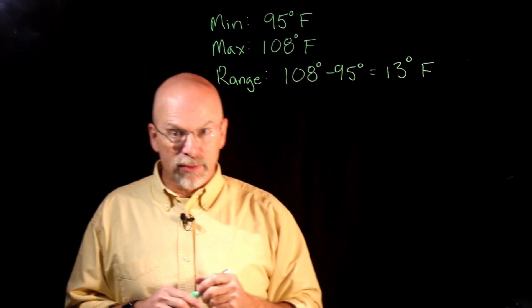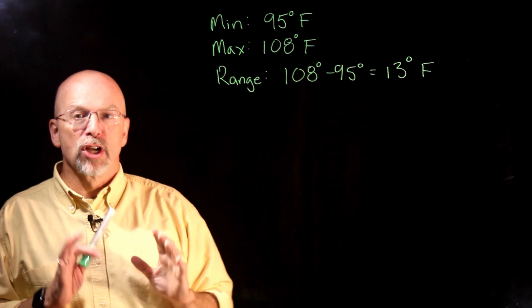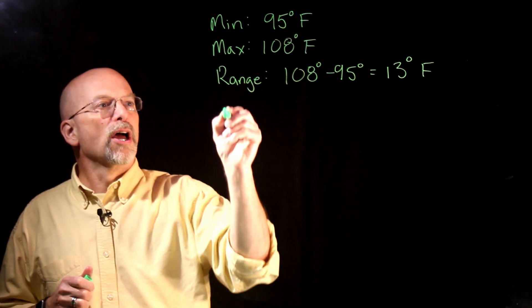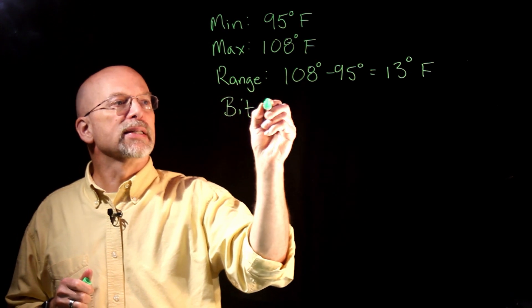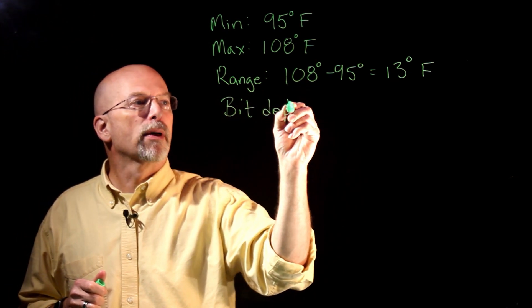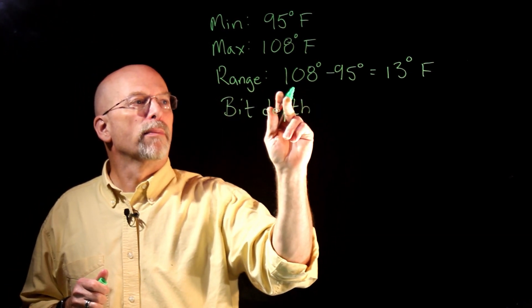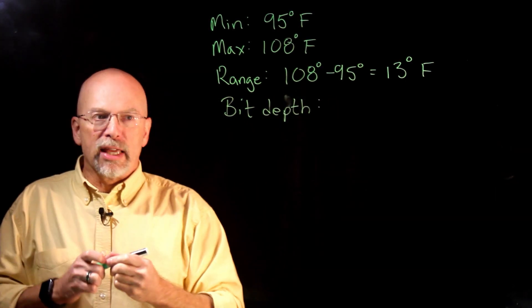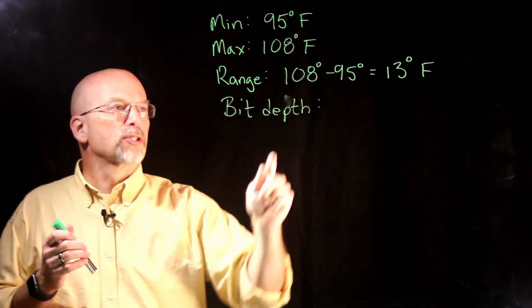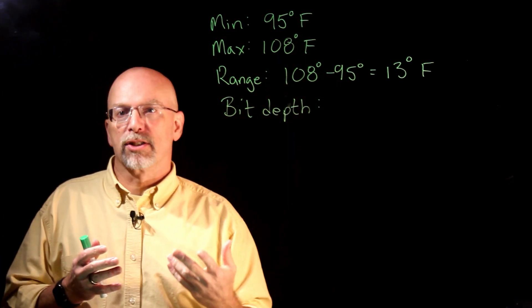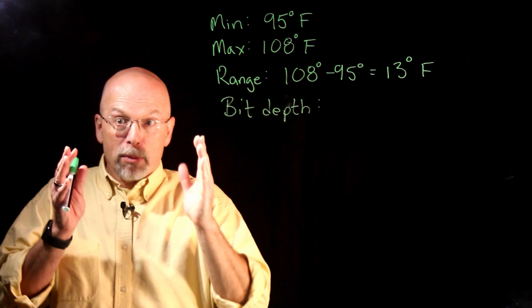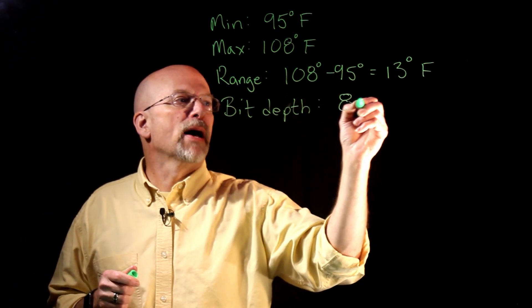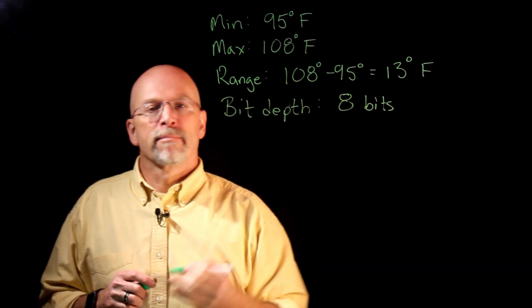The next piece of information we need to know is the bit depth. The bit depth is what is going to tell us how many bits the analog to digital converter is going to give us whenever it does a conversion. And this is going to be fixed. Let's just go ahead and say that this is eight bits.